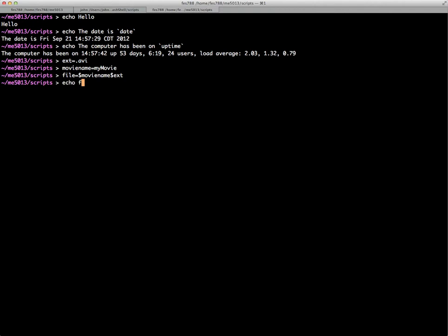And so we say movie name extension. And then if we echo file, we can see that where they're joined together. So the dollar sign is how you access variables, and you can combine two variables by just simply putting them together like that.